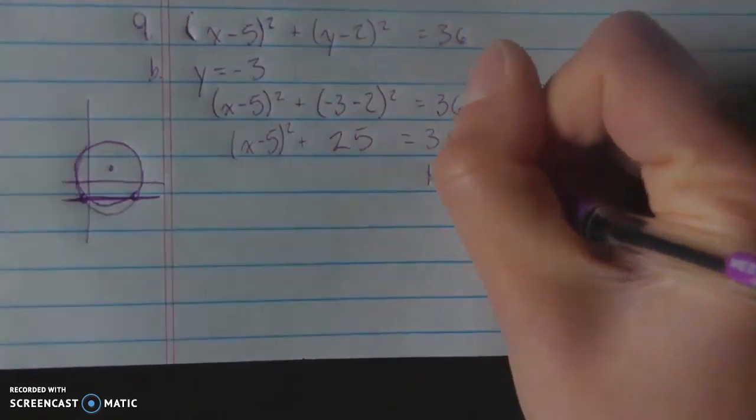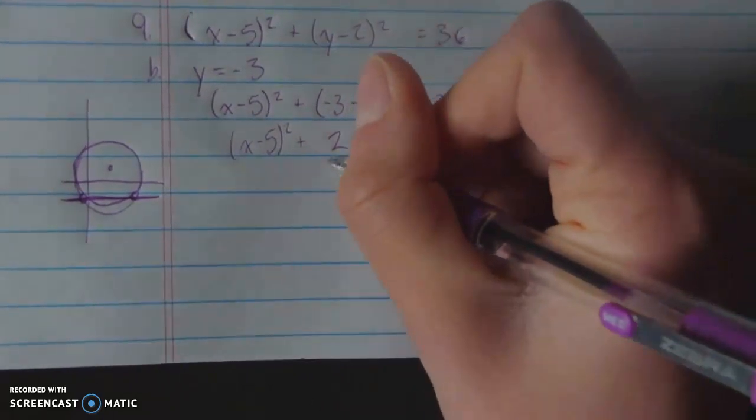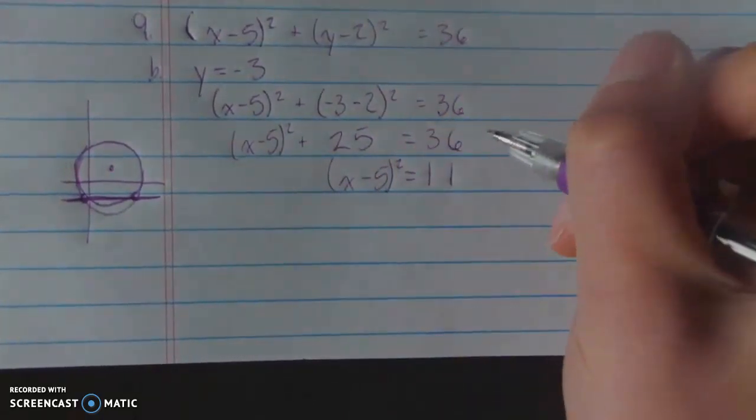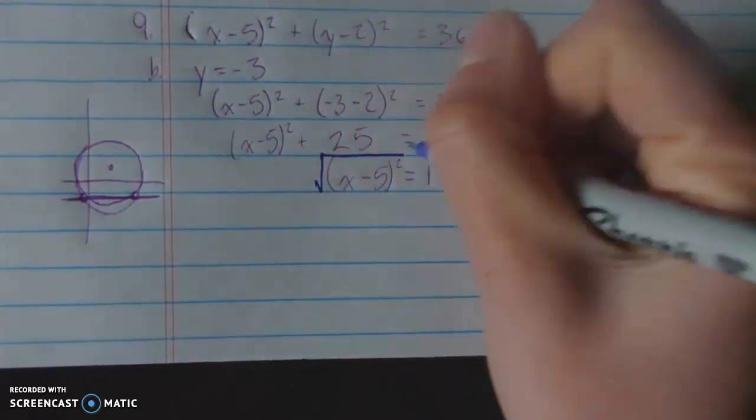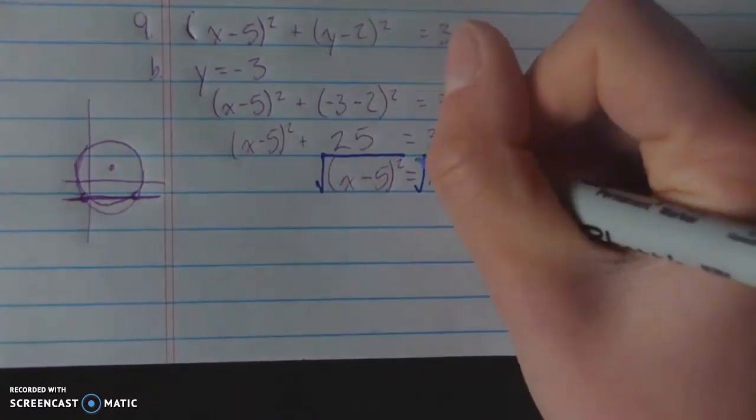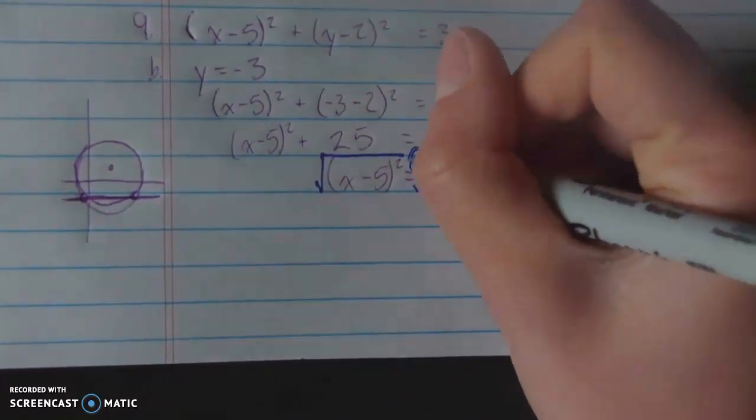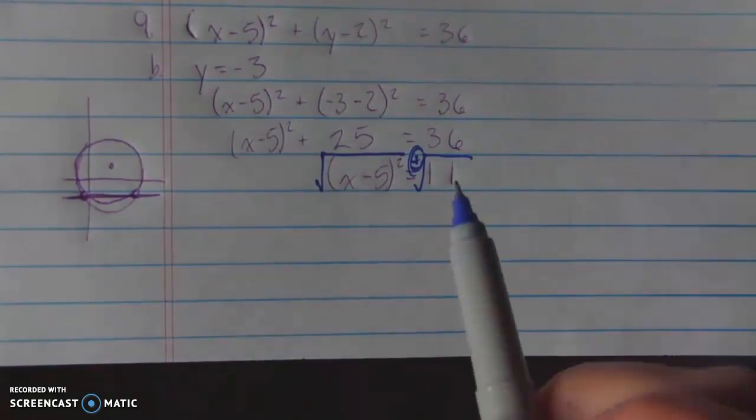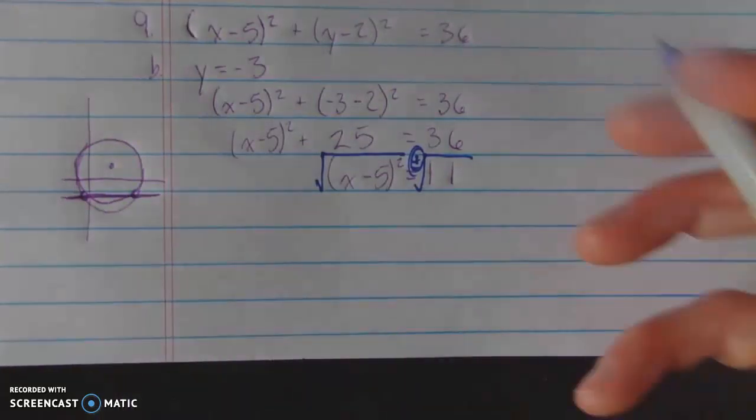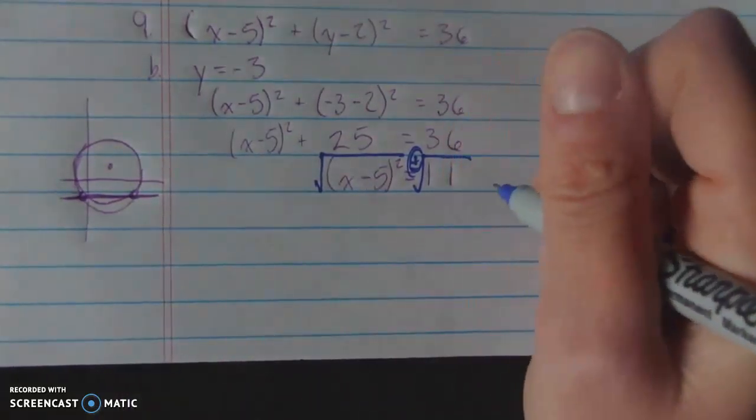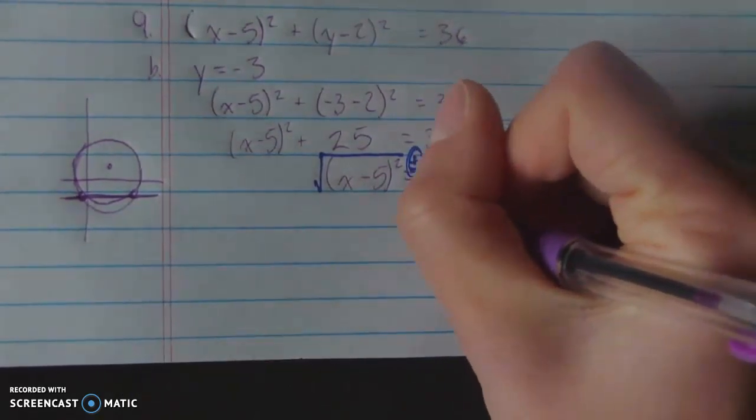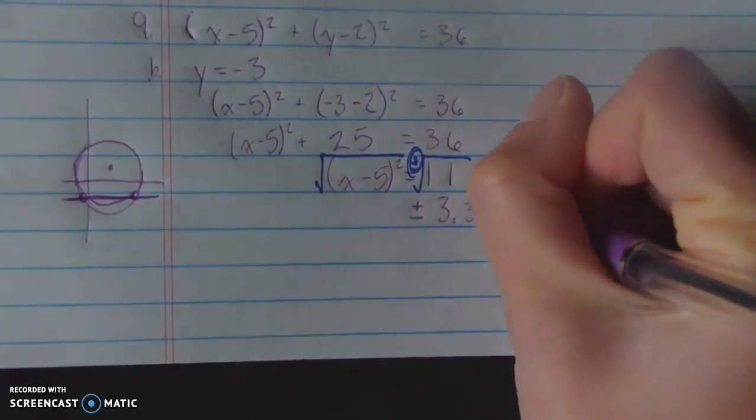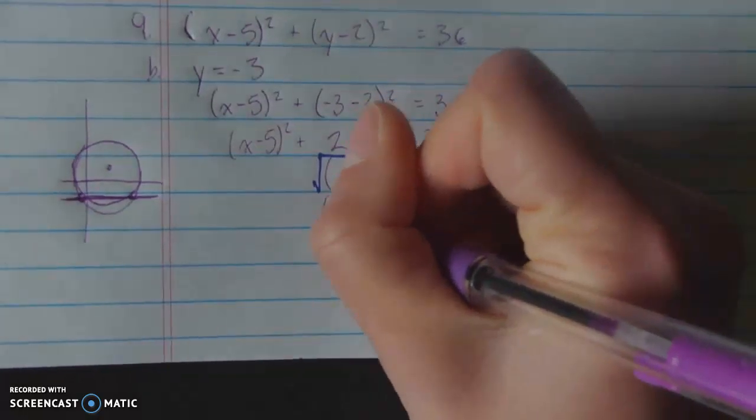Next, subtract 25 from both sides, giving you an answer of 11 is equal to x minus 5 squared. Now, here's that place where things go wrong. If you have a highlighter or something like that, maybe circle it or put a star next to it, that'd be a good idea to remind yourself that you have to remember to do the plus or minus here, because again, we're not dealing with distance. We're talking about just normal numbers on a graph. So we have plus or minus the square root of 11. And since approximate answers are OK for this one, I'm going to write this out as its approximate answer. We've got plus or minus 3.317.